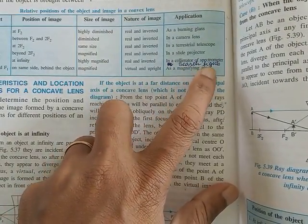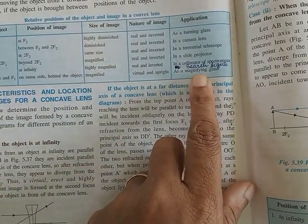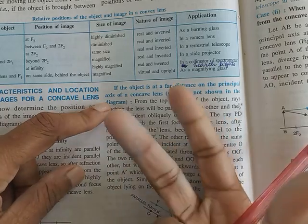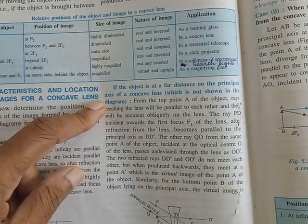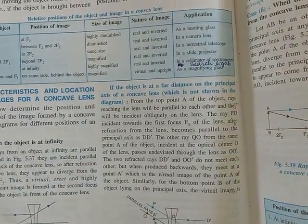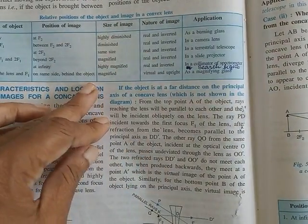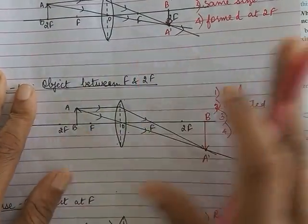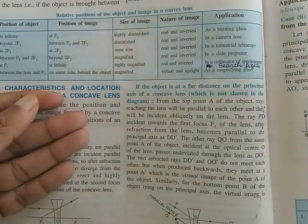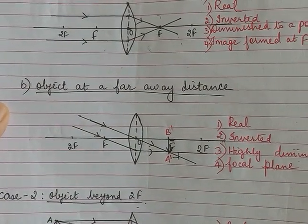Case six is the most commonly used case - as a magnifying glass. If the letters are too small and you want to magnify them, you keep a convex lens and the size will increase. Now I want you to pay attention to the size of the image. We are comparing all six cases together. In the previous video you drew all the diagrams one by one; now when you do a comparative study you will know what the differences are.